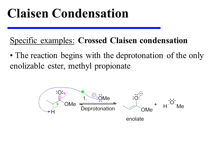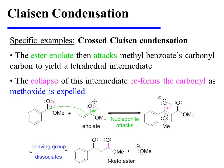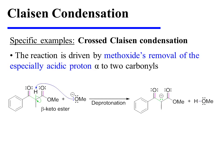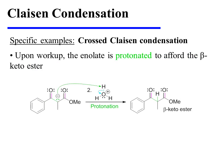The reaction begins with the deprotonation of the only enolizable ester, methylpropionate, forming a single ester enolate. The ester enolate then attacks methylbenzoate's carbonyl carbon to yield a tetrahedral intermediate. The collapse of this intermediate reforms the carbonyl as methoxide is expelled. The reaction is driven by methoxide's subsequent removal of the especially acidic proton between the two carbonyls. Upon workup, the enolate is protonated in aqueous acid to afford the neutral beta-ketoester.